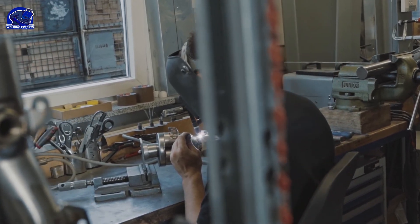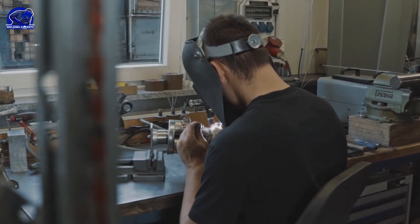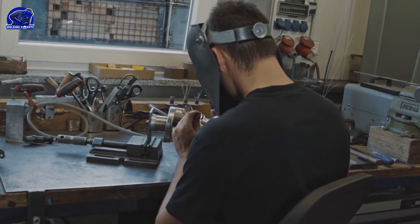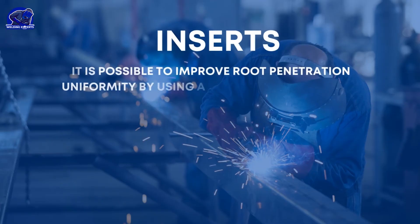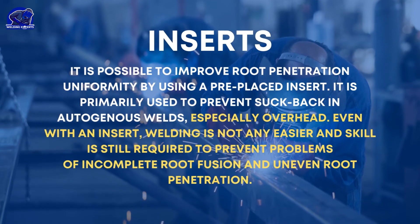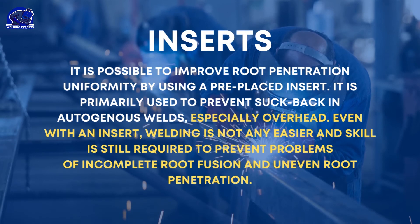Protecting and supporting the weld bead is also done with stick-on tapes and ceramic backing bars. In manual stainless steel welding, flux-cored wire can be used instead of solid wire in the root run. By doing this, the under-bead is protected from oxidation without the need for gas backing. Inserts: it is possible to improve root penetration uniformity by using a pre-placed insert. It is primarily used to prevent suck-back in autogenous welds, especially overhead. Even with an insert, welding skill is still required to prevent problems of incomplete root fusion and uneven root penetration.